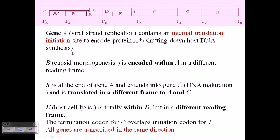Now K is at the end of gene A. So you can see here K is again in the end of gene A, but it is again associated a little bit with the gene C. Now gene C here is a DNA maturation factor and is translated in a different frame from A to C, translated a different way.